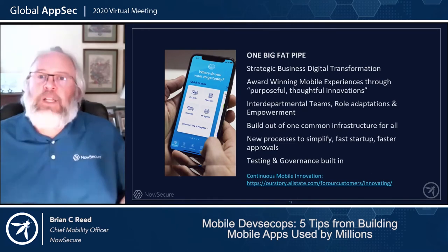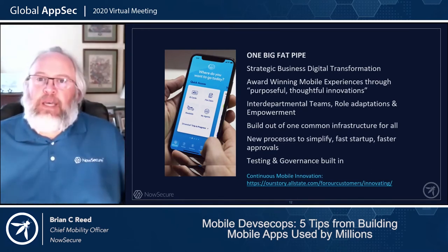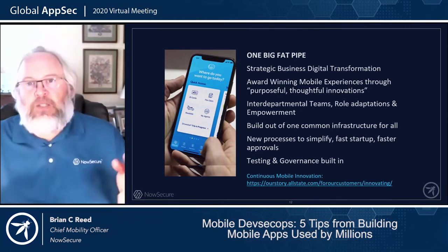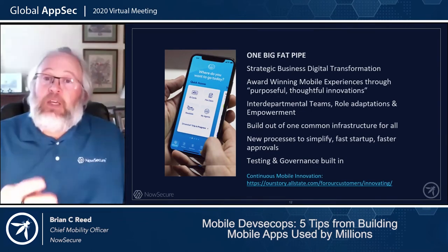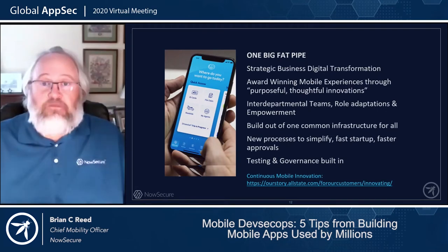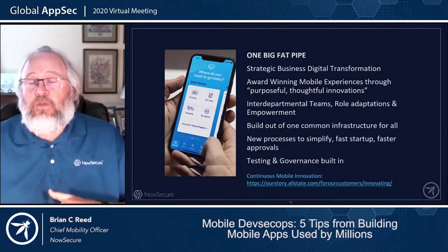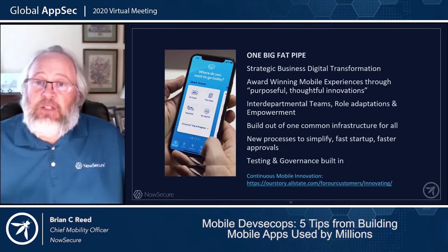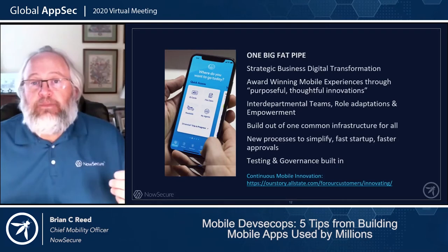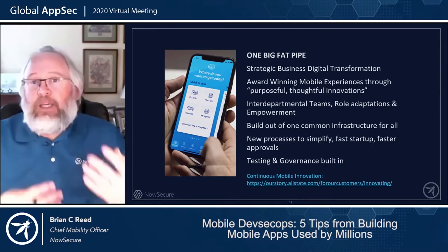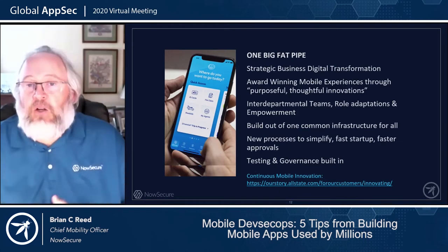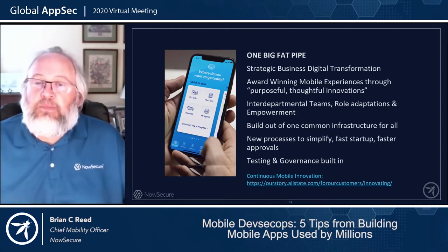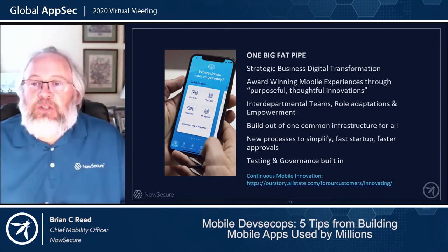Here's a really interesting one — an organization that went through a strategic business digital transformation. Allstate, which you might think of as a sleepy insurance company, is actually a massive innovation machine. They've delivered really amazing innovations and are actually driven by innovations across their technology platform. They've really become a technology company that happens to do insurance.